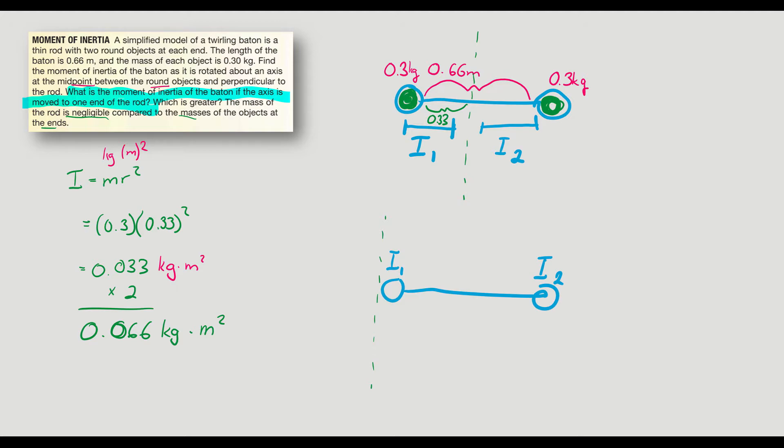Again, we have to think about moment of inertia of this object and this object. What is I1? Well, in this case, the mass is 0.3, but the radius is zero. That's where we're rotating from. So this guy has zero.